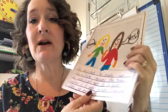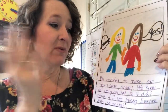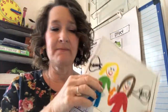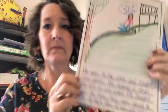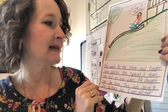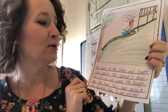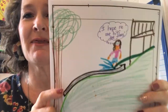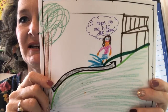We decided to make our slip and slide anyway. We knew we would get wet, so it didn't matter if it was raining. Everyone was so excited. We went to the store and bought some plastic, spread it down the hill in our yard, and brought over the hose. This was going to be so much fun — I was so excited. And there's my thought bubble: 'I hope no one hits the trees.'